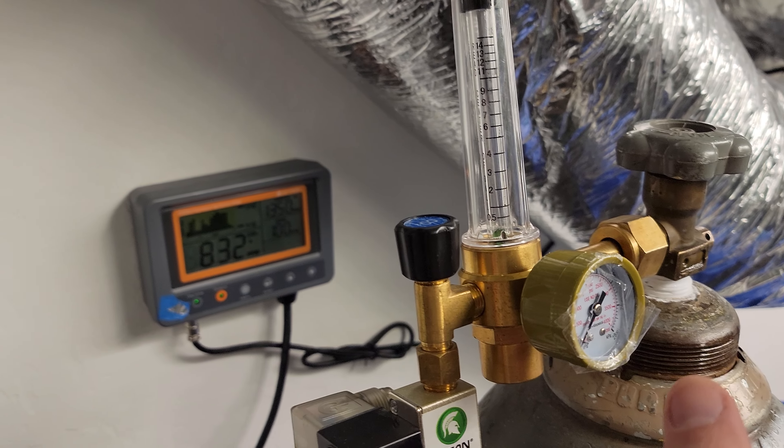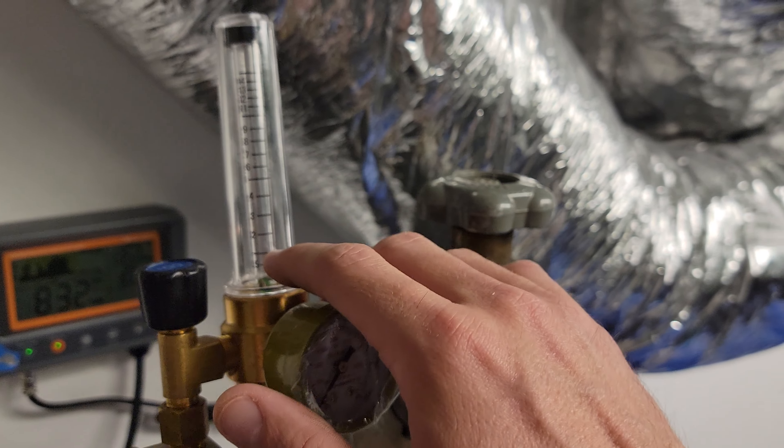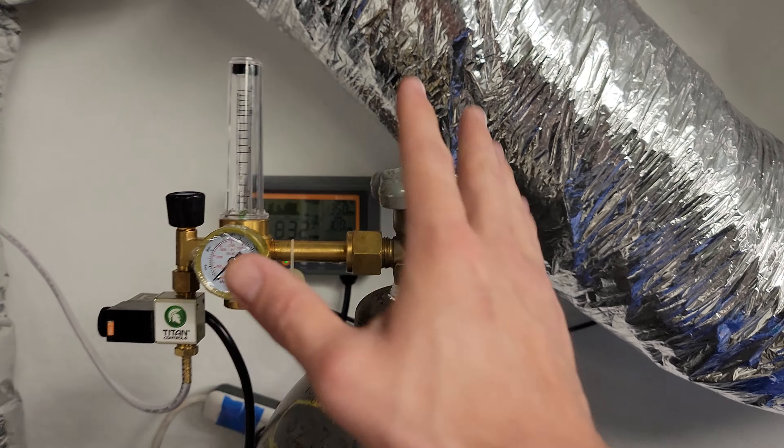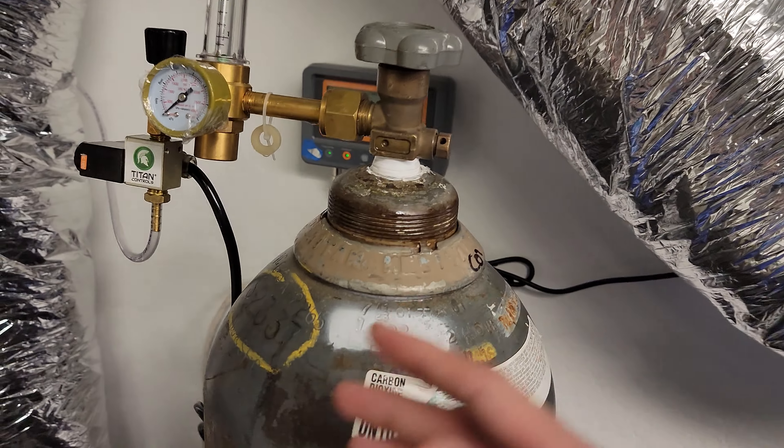First, your monitor will plug in right there, and then your regulator plugs into your monitor because that's going to tell this when to turn on and off. Otherwise, this will just stay on and then that's where you need to know what these measurements are, and you got to gauge it because it just never turns off.